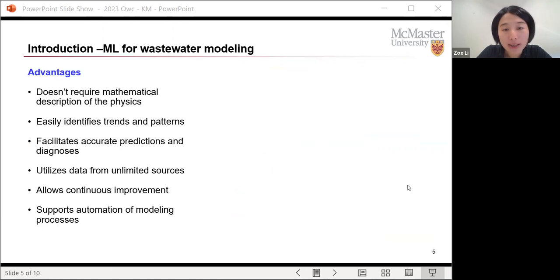So with that in mind, we can think about the advantages and the disadvantages of machine learning. The advantages are very obvious. In this case, we do not need to have a full understanding of the physics or the reactions that's taking place in the system. We can easily identify trends and patterns because we have a lot of data to analyze.